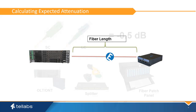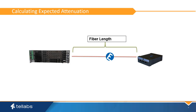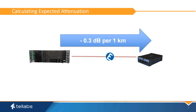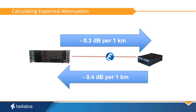Fiber distance should also be used to calculate expected attenuation, measured as the cumulative distance the signal travels between the OLT and the ONT in kilometers. In PON, typical attenuation downstream is 0.3 dB per kilometer. Upstream, 0.4 dB per kilometer is used.